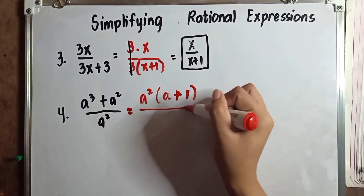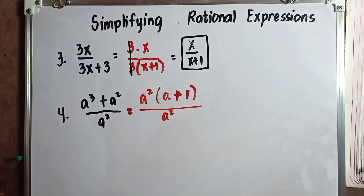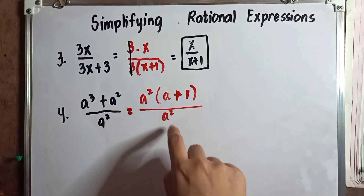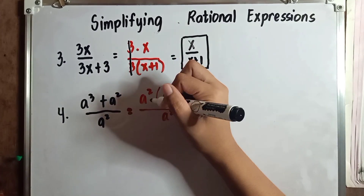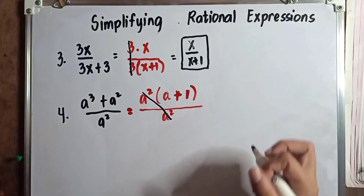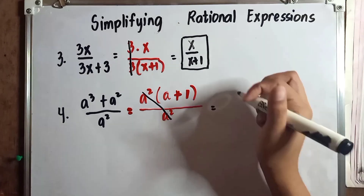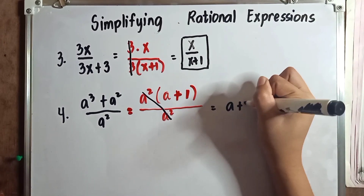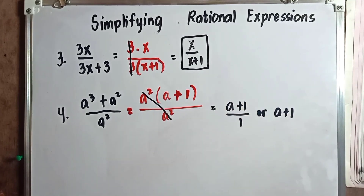We place a squared in the denominator. We don't need to factor a squared further since it already has a matching factor. We cancel out a squared and a squared. Our final answer when asked to simplify a cubed plus a squared over a squared is a plus 1 over 1, or simply a plus 1.